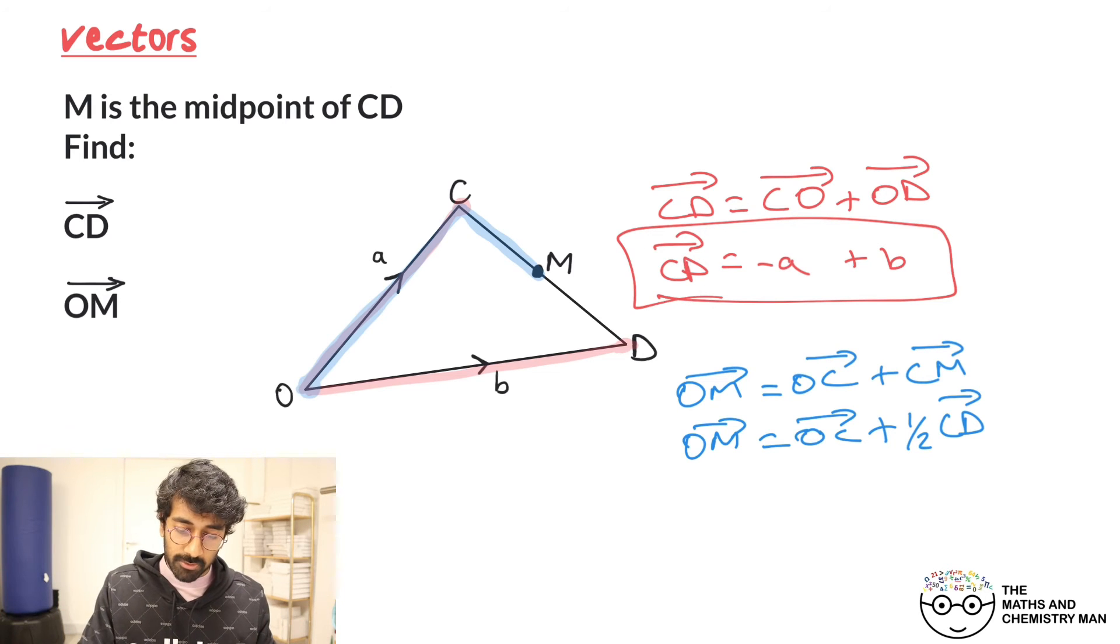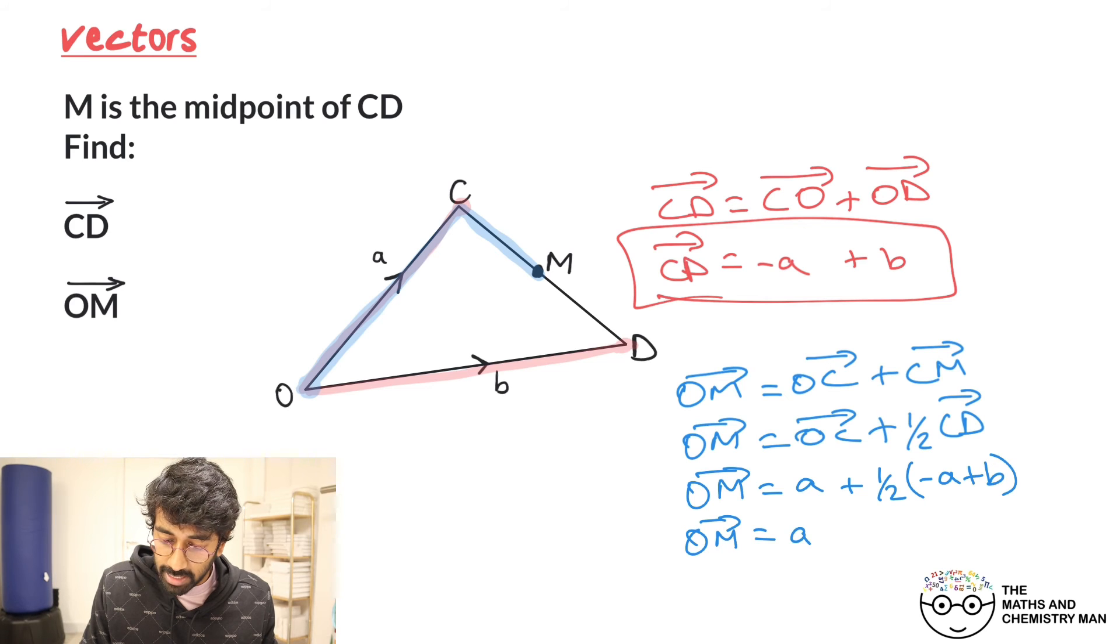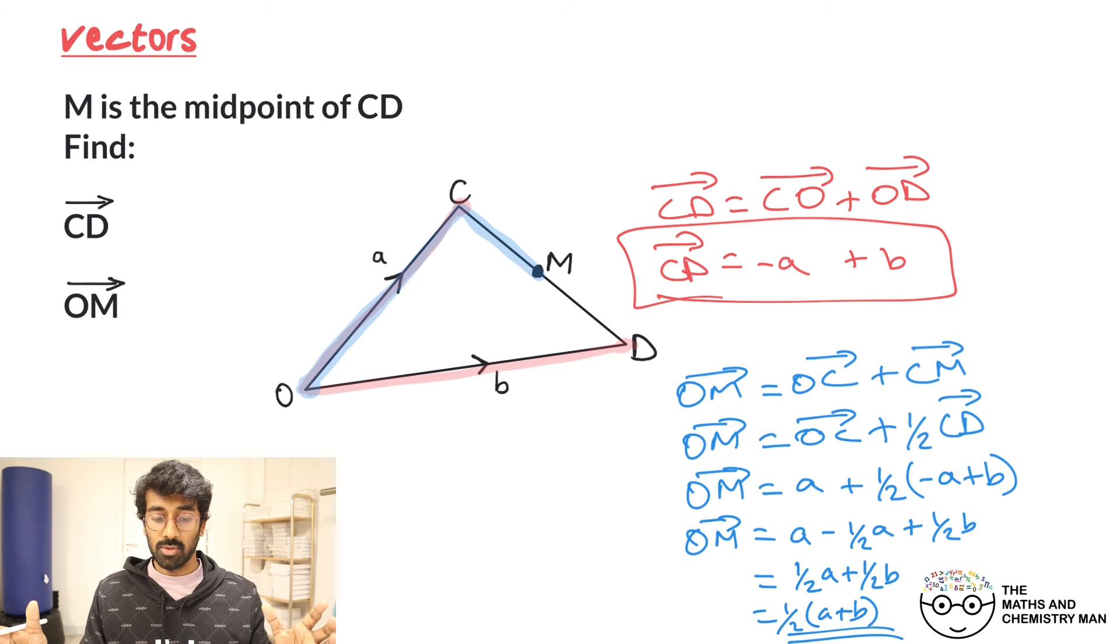So don't create more work for yourself, use what you've already got in the question. Now just plug all the stuff in. OC is just A plus a half of CD, so that's minus A plus B. Times that out, collect it all together. We're going to have A take away half A and then plus a half B. Bring that all together, we would have a half A plus a half B. Factorize that out, we've got half times A plus B. Boom, there we go, done, sorted.